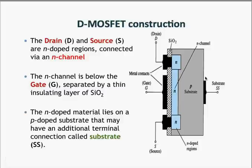This figure shows the typical construction of a depletion MOSFET or D-MOSFET. Just like JFETs, a D-MOSFET has three terminals: the drain, the source, and the gate. The metal gate is located on top of a very thin silicon dioxide layer, which lies above an N-channel material. The drain is connected to N-type material and the source is also connected to N-type material, with the source and drain connected together by an N-type channel. All of these N-type materials are fabricated on top of a P-type substrate.